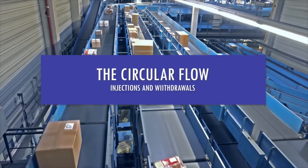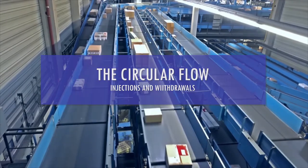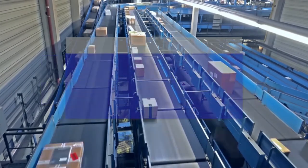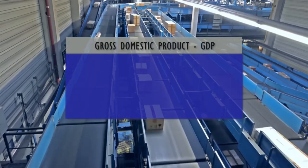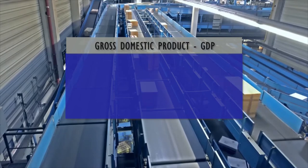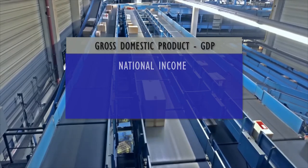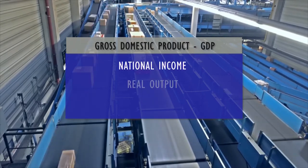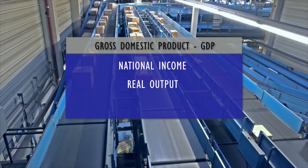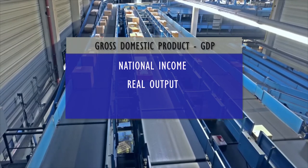The circular flow of income. Gross domestic product, or GDP, is the commonest measure of an economy's national income and includes the output of all goods and services produced over a period of time, usually one year.